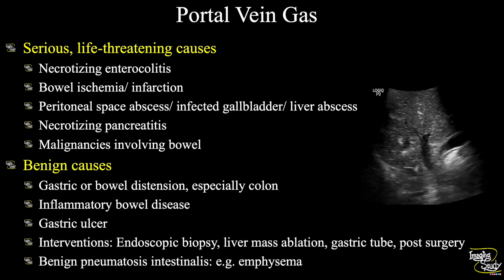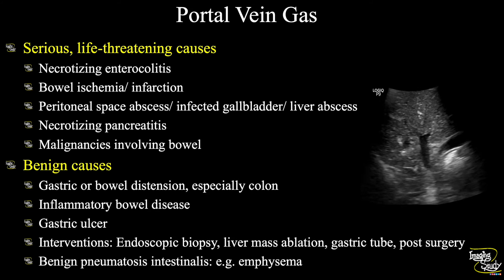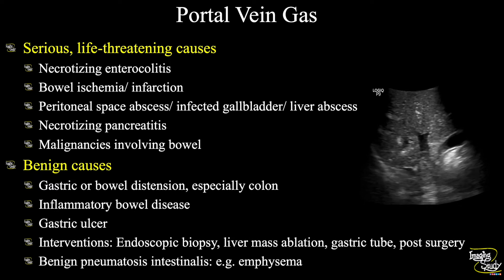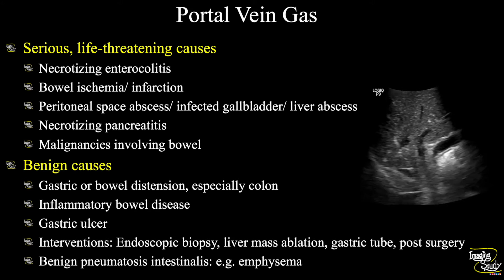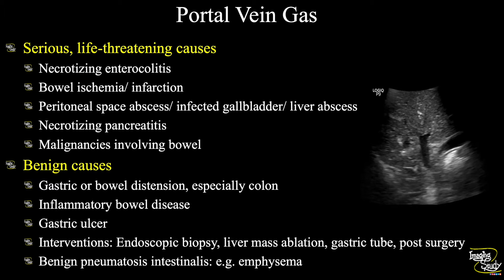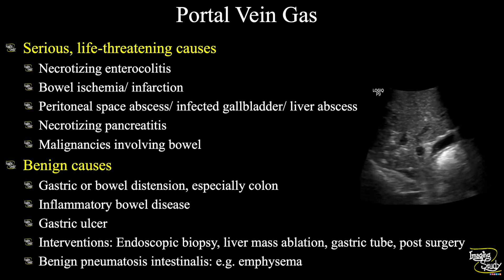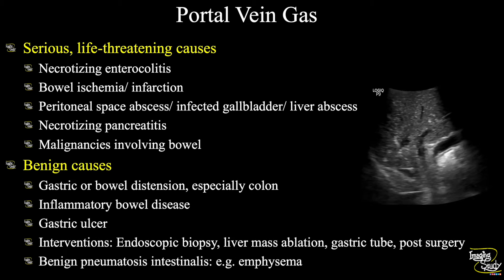Portal venous gas may be a life-threatening condition. Especially when the patient presents with necrotizing enterocolitis, bowel ischemia, or infection — these are the common cases in practice. It may also be due to peritoneal space abscess, infected gallbladder or liver abscess, necrotizing pancreatitis, and bowel malignancies.